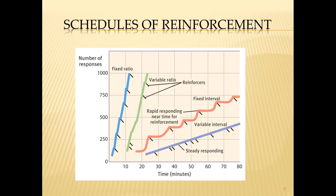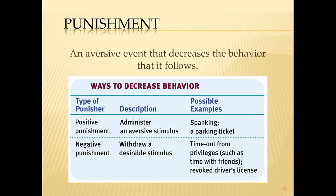Now let's look at punishment. Punishment is an aversive event that decreases the likelihood a behavior will recur. Positive punishment means administering an aversive stimulus — like spanking or giving someone a bad grade. Negative punishment is taking away something desirable — like taking away freedom by grounding someone, or removing car privileges. It's worth noting that some punishments can arguably belong on both sides, and you should be able to identify what is being added and what is being subtracted.